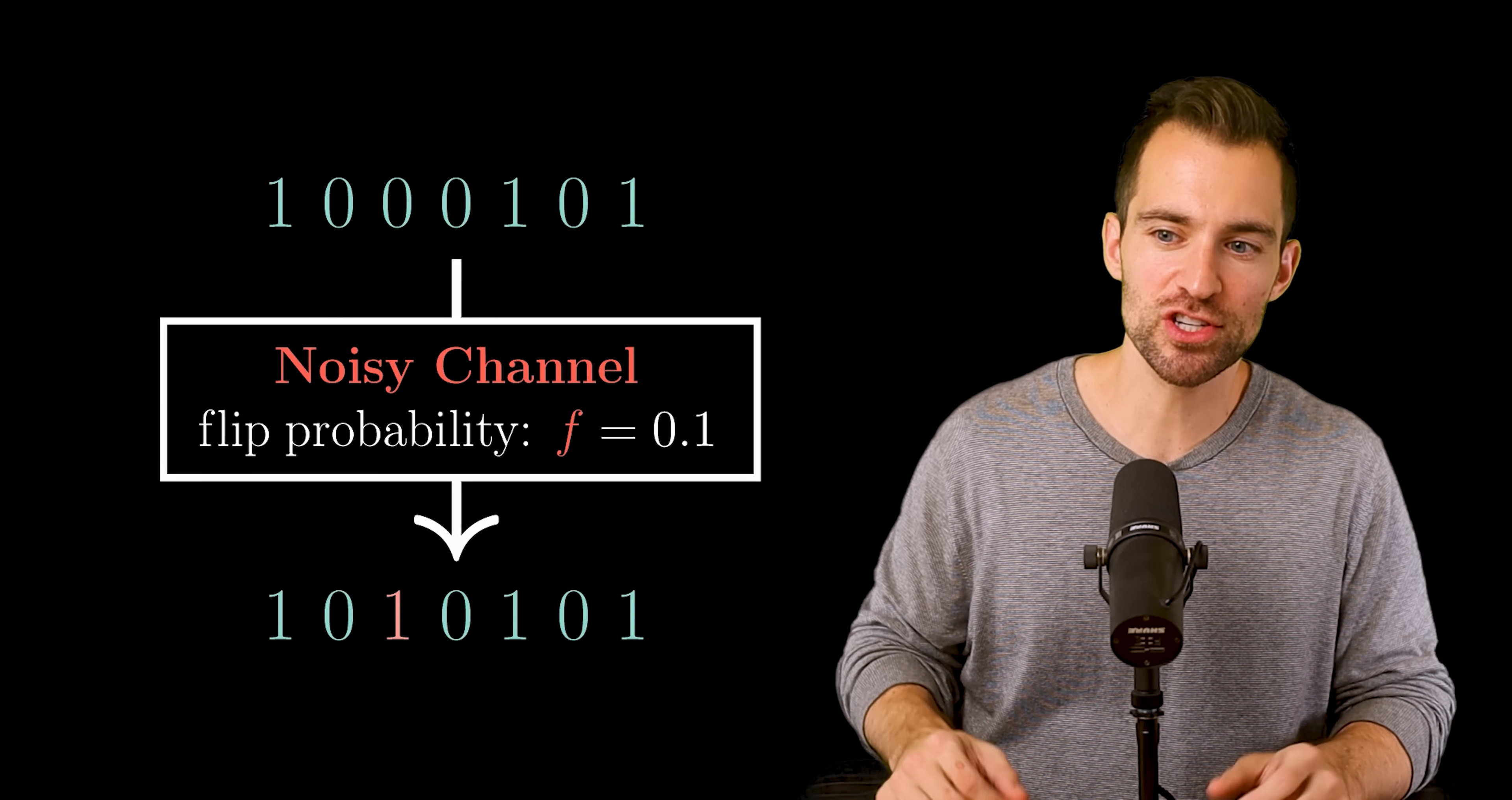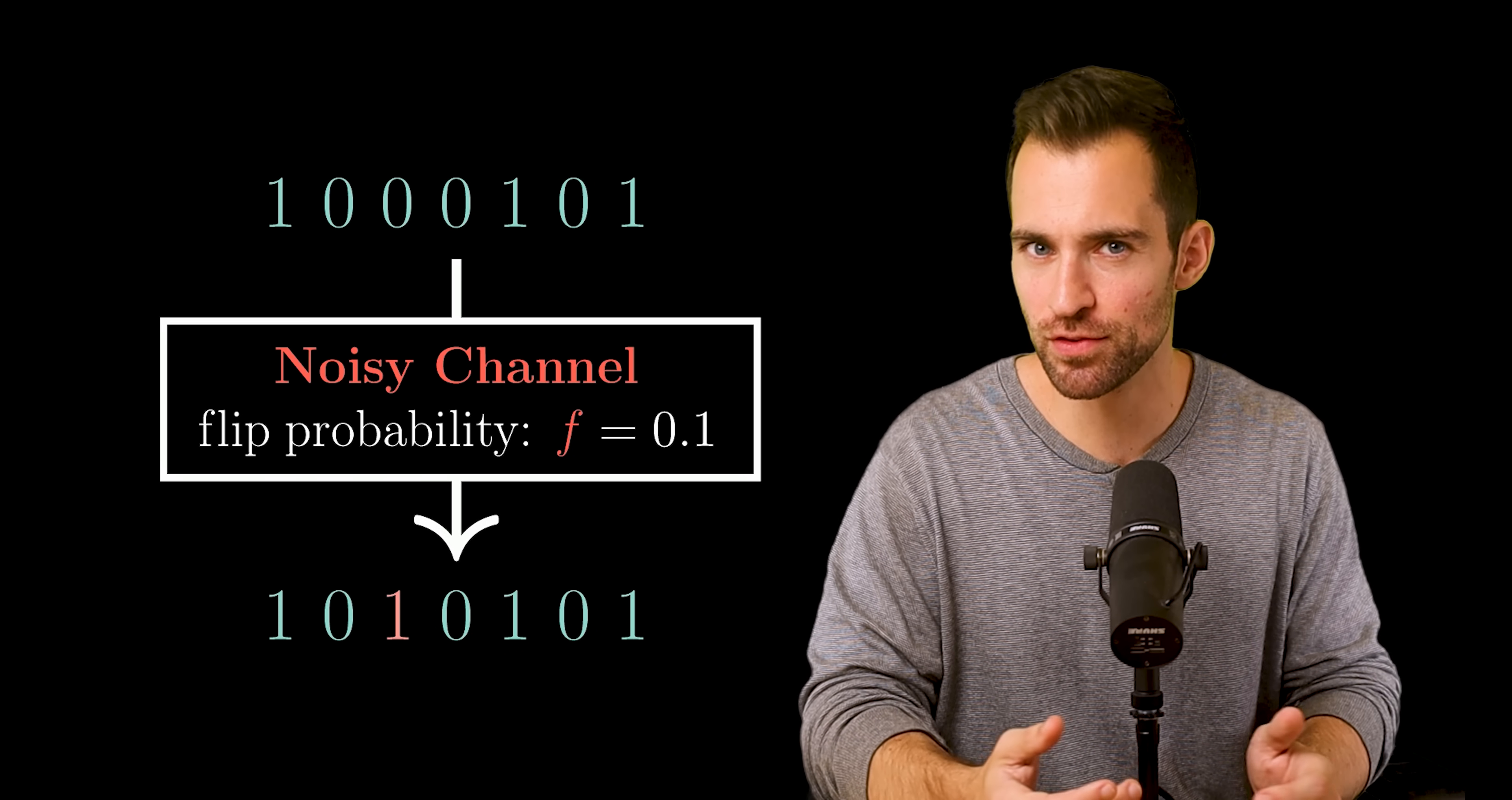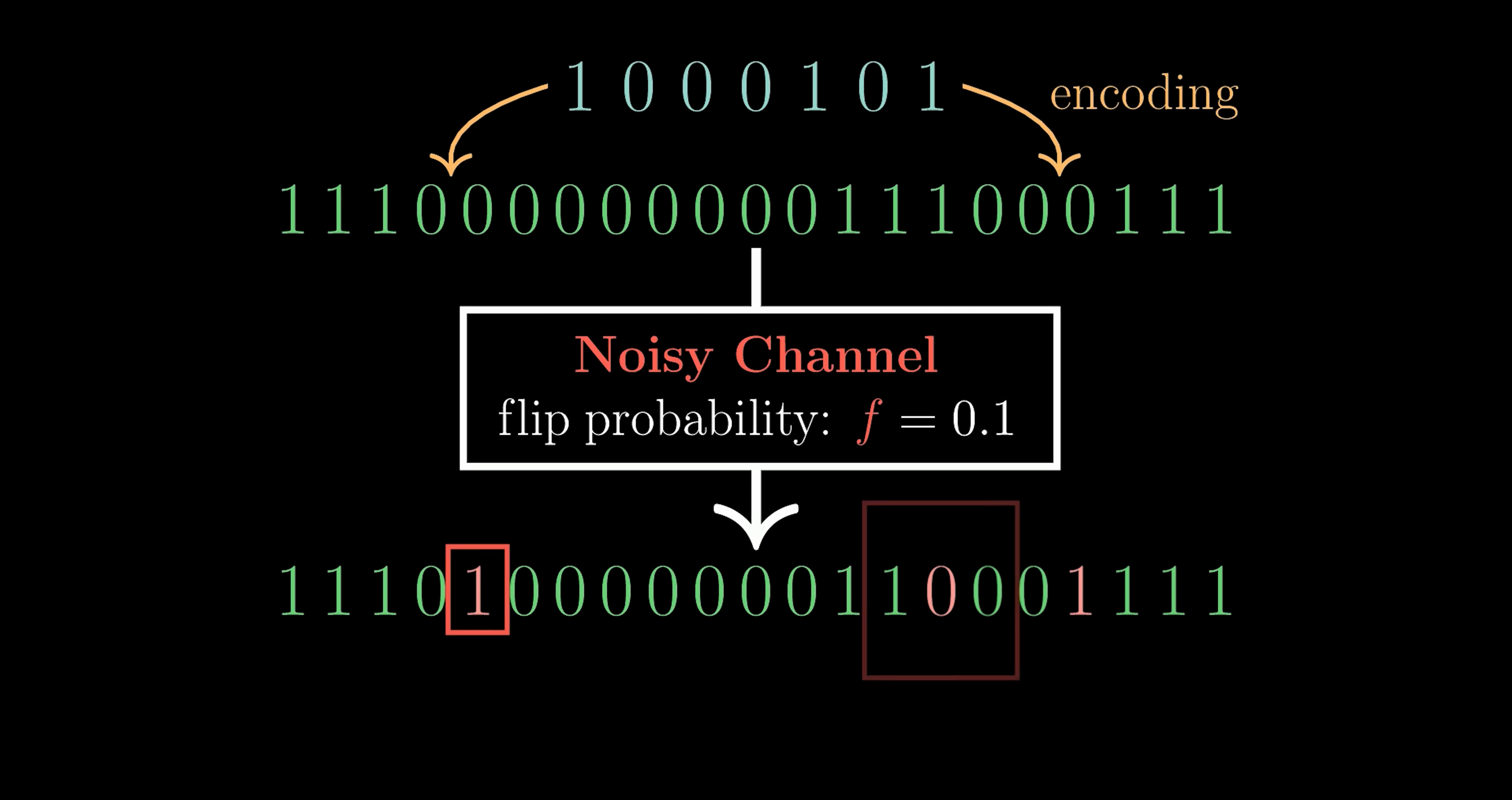Well, one simple way is to just repeat each bit, say three times, and have the receiver interpret each block of three with the most common bit. In our example, this means we'd encode our original message as a redundant string repeating each bit three times. The encoded message is then passed through the noisy channel, which flips some bits. Now the receiver knows we're repeating bits three times, but doesn't know which bits are flipped. So they interpret each chunk of three as the most common bit, since that's the most likely intended bit.